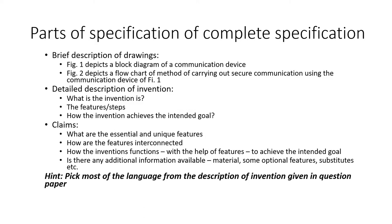The next important feature of a complete specification is the brief description of drawings. This is where you briefly describe what your various drawings in the specification relate to. For example, figure 1 may depict a block diagram of a communication device and figure 2 may depict a flowchart of a method implemented in that communication device.